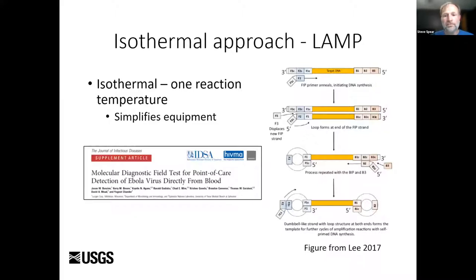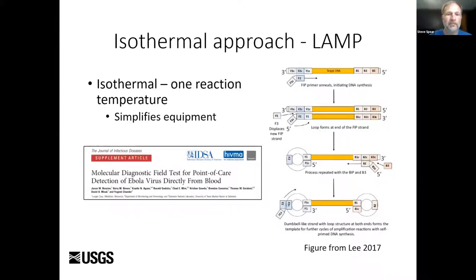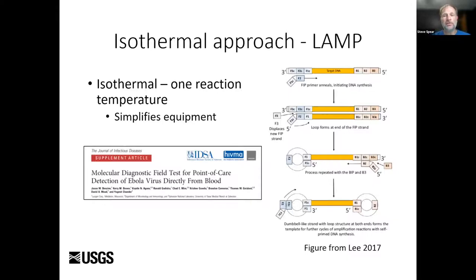One approach using genetic tools that has shown a lot of promise and that our lab has used thus far is getting away from PCR — the typical way that we amplify DNA in the lab, which requires cycling temperatures and more equipment — and using an isothermal approach. That just means being able to amplify DNA or RNA using a single temperature, so at its simplest you would just need a heat block.